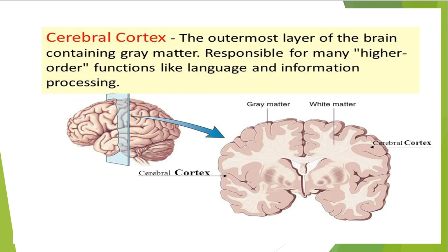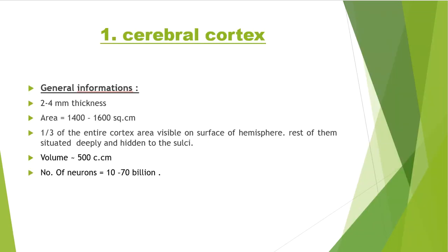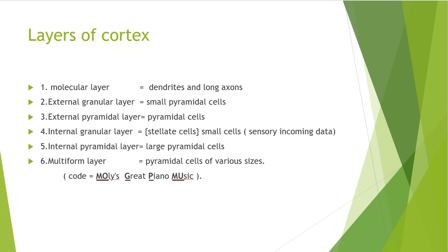The cerebral cortex is responsible for higher-order functions like language and information processing. Here we see the coronal section of the cerebral cortex. It appears as a 2 to 4 millimeter thick layer of gray matter that covers the hemisphere from outside. The area of cortex is approximately 1400 to 1700 square centimeters; only one third — approximately 30% — is evident on the surface of the hemisphere, while the rest is hidden in the sulci. The volume of cortex is about 500 cubic centimeters.